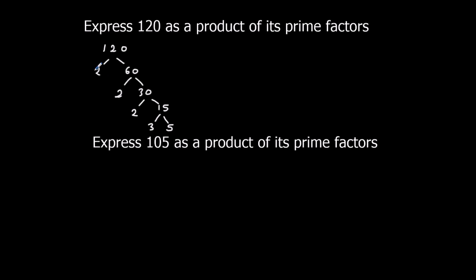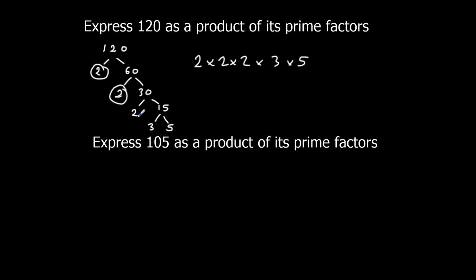Now we've got all prime numbers. So 120 is 2 times 2 times 2 times 3 times 5. All the numbers we've broken it down to — all the prime numbers — multiplied together make 120.